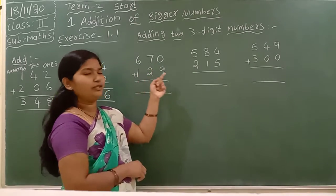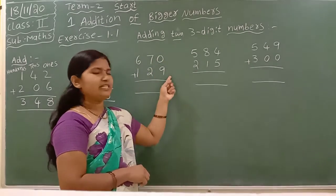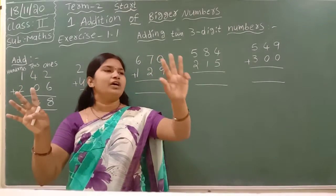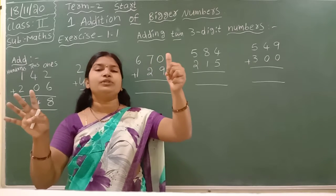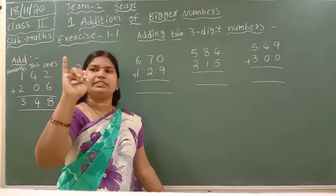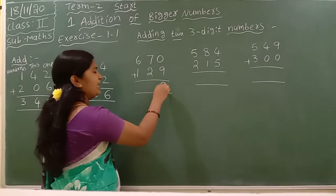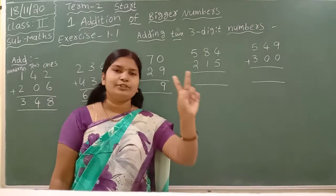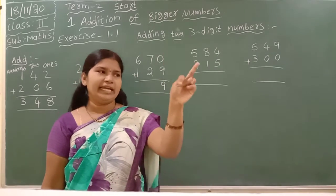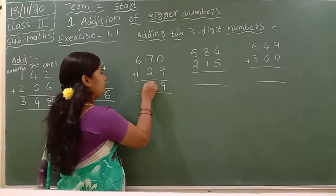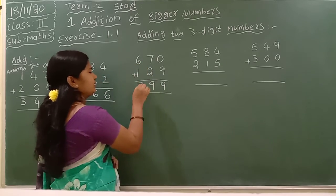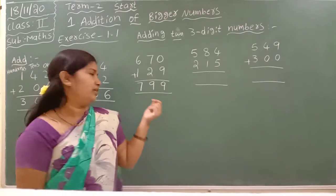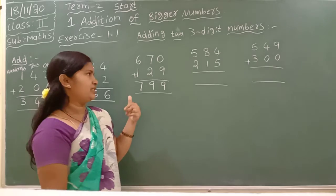Next question: 670 plus 129. 0 plus 9 — 0 in the mind, take 9 fingers: 0, then 1, 2, 3, 4, 5, 6, 7, 8, 9. The answer is 9. Next: 7 plus 2 — 7 in the mind, take 2 fingers: 7, then 8, 9. Write 9 in the 10s place. Next: 6 plus 1 — 6 in the mind, take 1 finger: 6, then 7. Write 7 in the 100s place.